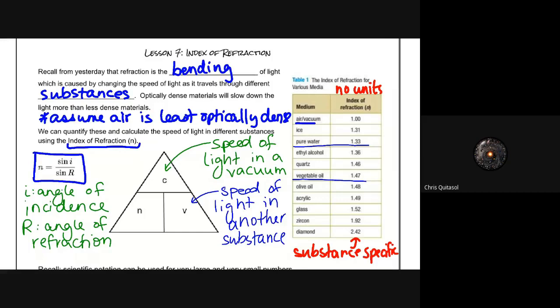Recall from yesterday that when we're talking about light bending, we're talking about refraction. The idea being that as light moves from one substance or one medium into another, the speed of light changes. It either gets faster or slower. And based off of that speed change, we see what's called refraction, that bending of light, which is caused by the changing of speed as it travels through different substances.